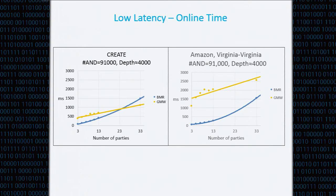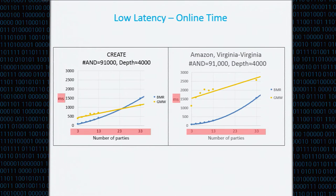Looking at the online time alone shows an interesting picture. The graph on the right is from Amazon with machines in Virginia only, and the graph on the left is from CREATE with very low latency. The number of parties here goes up to 33 and the scaling is in milliseconds. For the lower number of parties, our implementation outperforms GMW. However, for 33 parties in CREATE, the GMW implementation already outperforms ours even when looking at online time only — and this is a very deep circuit with depth 4,000. In Amazon, for 33 parties we are still ahead, but around 50 parties we expect GMW will already outperform.